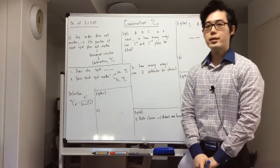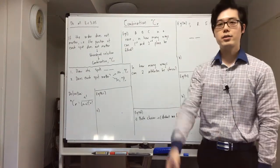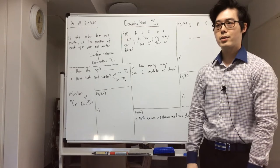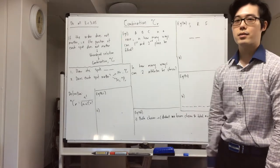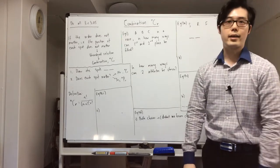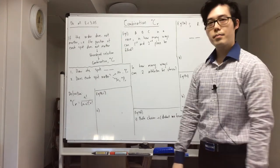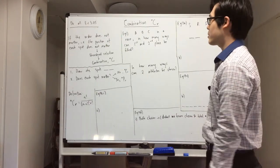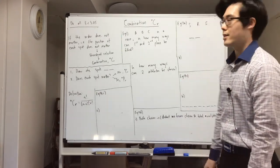For our extension lesson today we're going to be looking at combination. Last lesson we looked at permutation, so let's have a look at the difference between that and combination today. Before I explain what combination is, let's have a look at this example from last lesson.